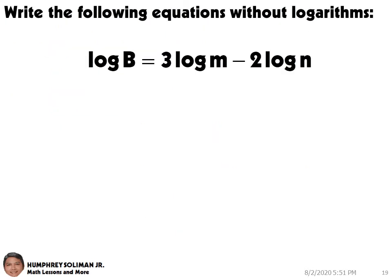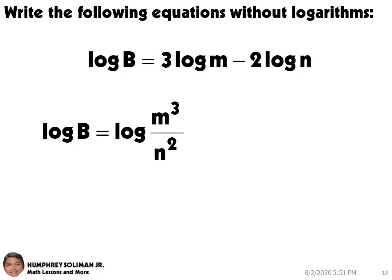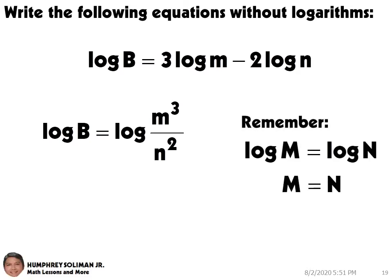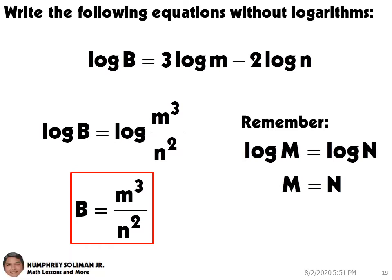In our next example, we need to write the equation below without logarithms. We can use the laws of logarithms in writing the right side into a single logarithm. And then, remember, if log m is equal to log n, then m is equal to n. Therefore, b is equal to m cubed over n squared.